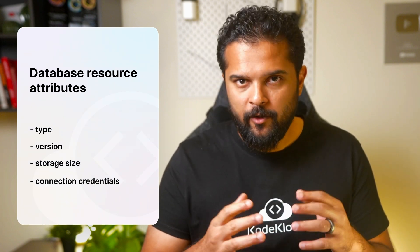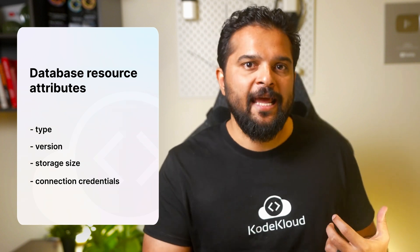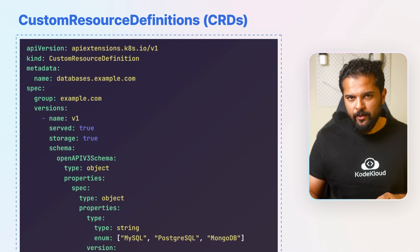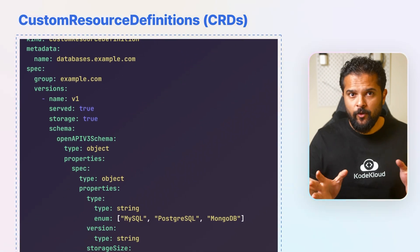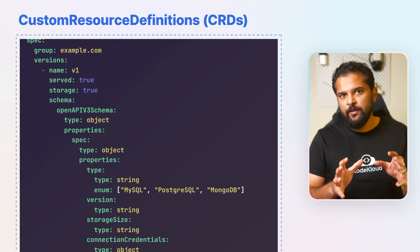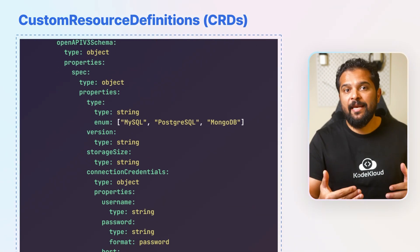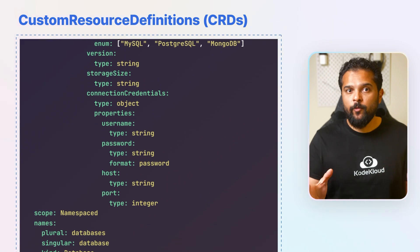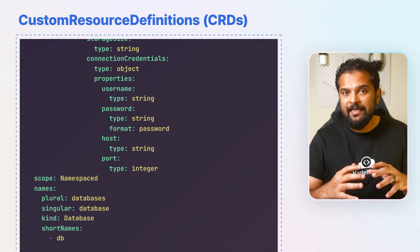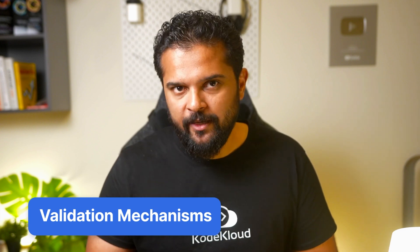Custom resource definitions allow users to define and manage these custom database resources, making Kubernetes adaptable to any kind of use case. To ensure that each database resource is correctly configured and doesn't disrupt the cluster's operations, it's crucial to have validation mechanisms in place. This is where some of the challenges begin with CRD.